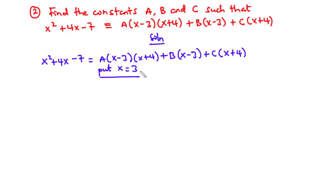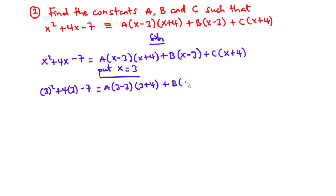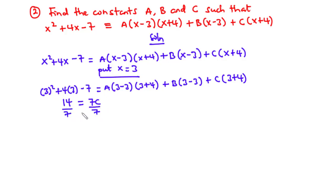Substituting x = 3: 3² + 4(3) − 7 = a(3 − 3)(3 + 4) + b(3 − 3) + c(3 + 4). The left side gives 9 + 12 − 7 = 14. The a and b terms go to zero, leaving 14 = 7c. Dividing by 7 gives c = 2.